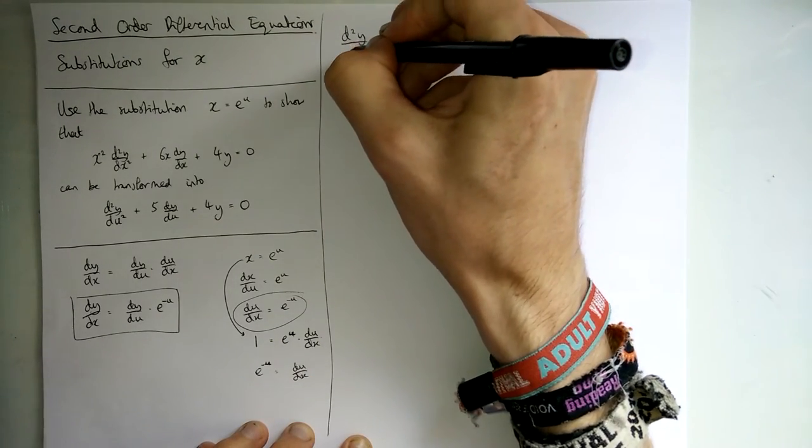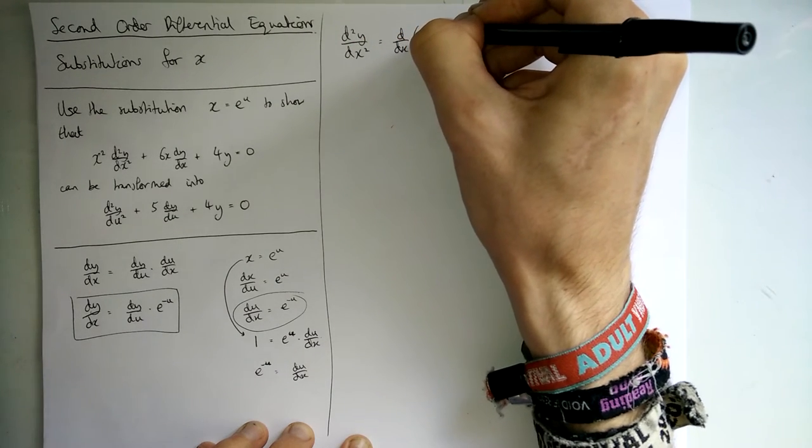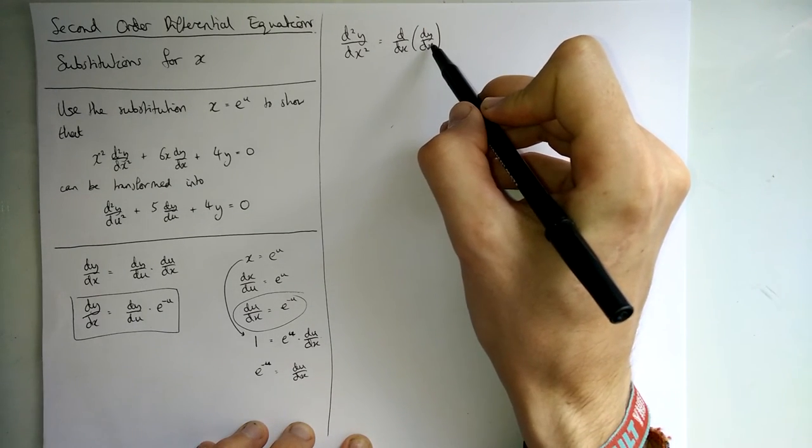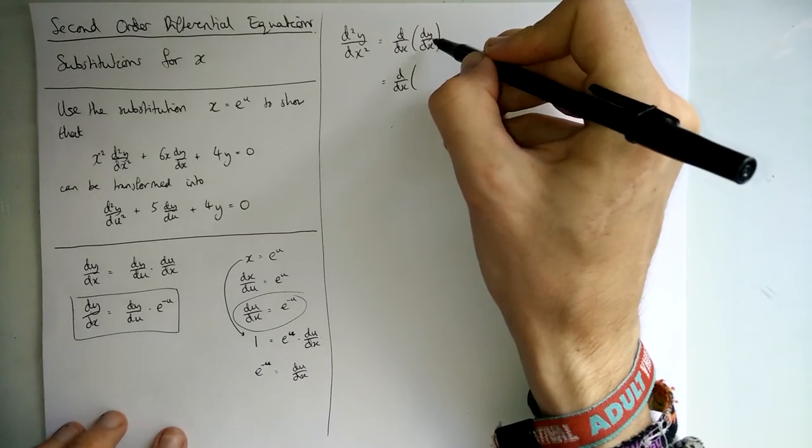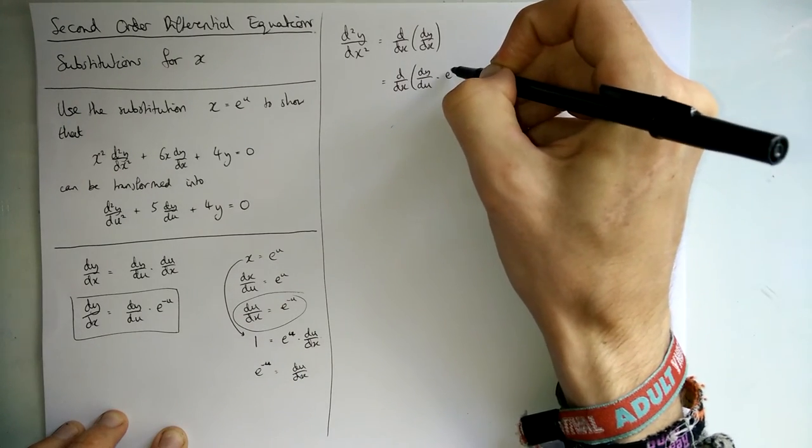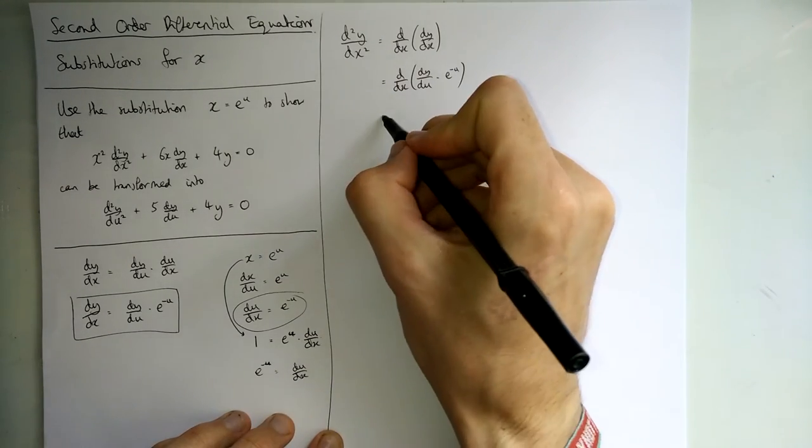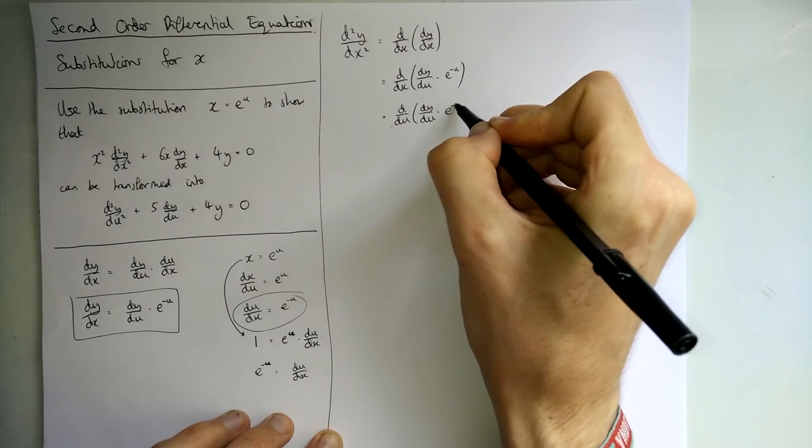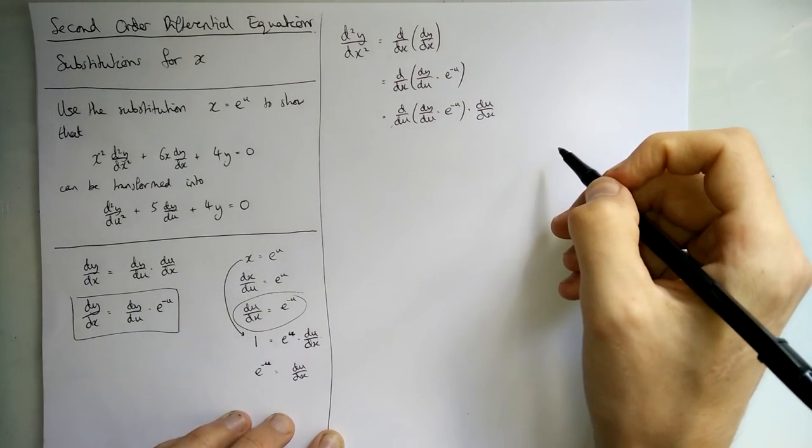So d²y/dx² is really the second differential of dy. So you differentiate once and you differentiate the same thing again. So let's plug in what we know dy/dx is. This thing down here: dy/du times e to the minus u. That gives us some of the things you need. Obviously this dx is still there so we're going to swap that out for a du. Of course you can't just swap out a du. You've got to use the chain rule. So you've got to times by du/dx so that the u's cancel and the x is still in the same place it was before.